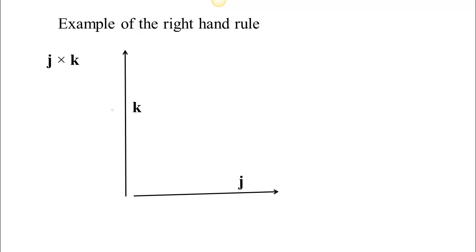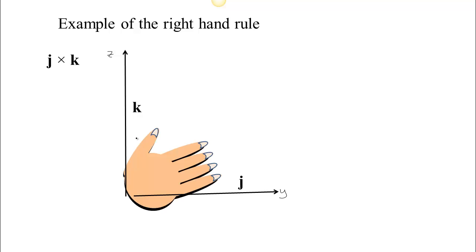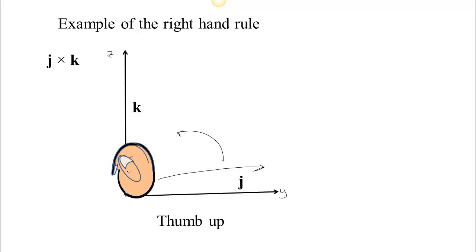Let's do j cross k. It has to be either i or negative i, since j is along the positive y-axis and k is along the positive z-axis, so they lie in the y-z plane. Align your hand along j and curl it toward k — your thumb comes up, meaning j cross k is out of the board, in the positive x direction. So j cross k equals positive i.